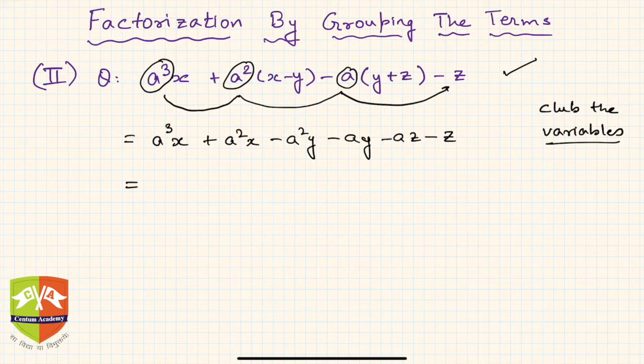Please be very careful while dealing with signs. Now can I club these two together? Yes, x is the common variable and to our surprise we see a³ and a², so a² is common as well. Hence a²x is the common factor.